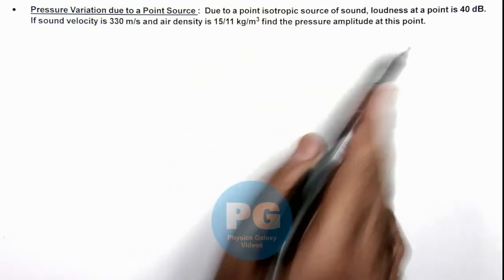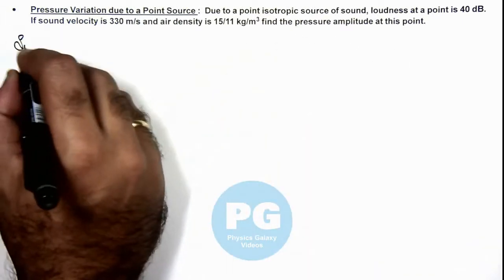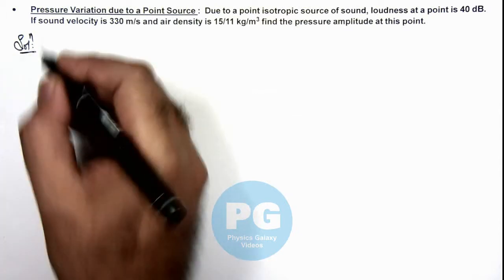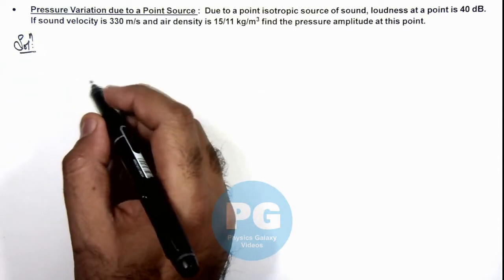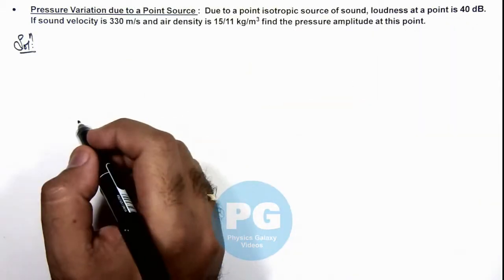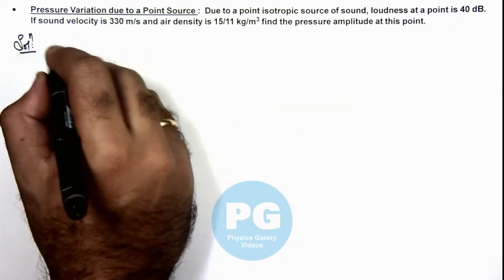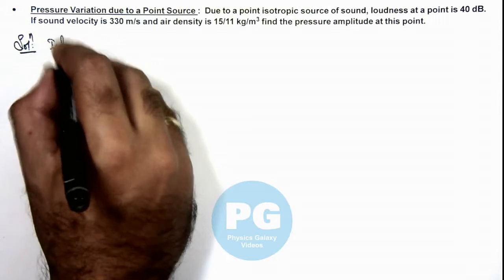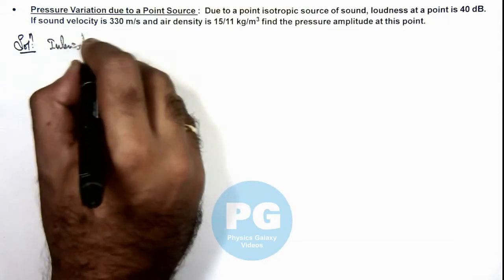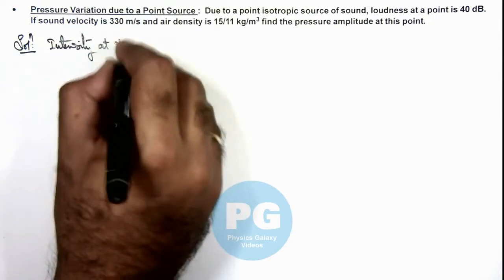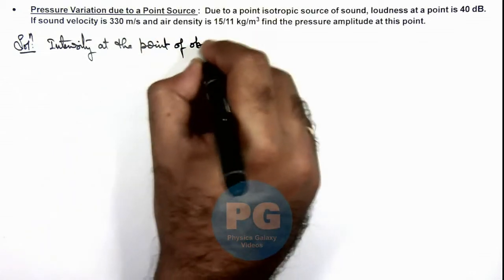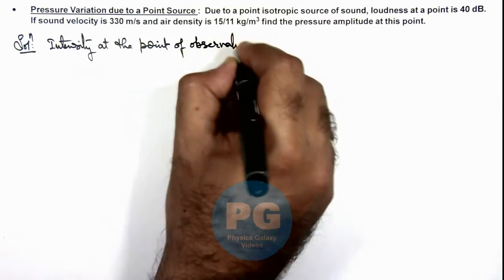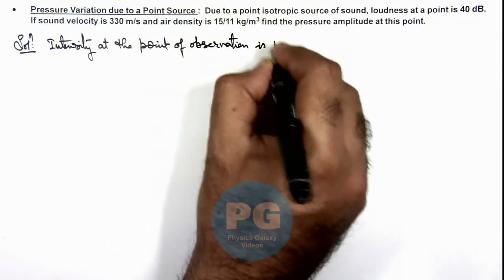We are required to find the pressure amplitude at this point. So first we can calculate the wave intensity at this point where loudness level is given. The intensity at the point of observation is I.